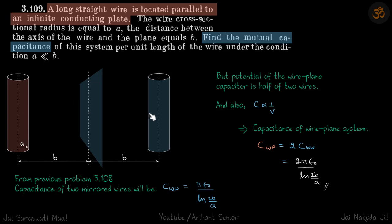If potential becomes half, the capacitance becomes twice, because the other factor q is the same—q between this and this is the same as q between this and this. So just the capacitance and voltage change. Potential is half, which means capacitance will become twice. So the capacitance of the wire-plane system is 2 times the capacitance of the wire-wire system, which gives our answer. Potential of the wire-plane capacitor is half of two wires, and C is proportional to 1/V.